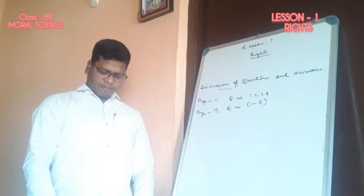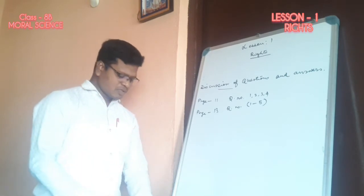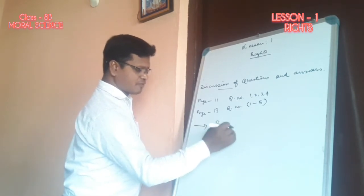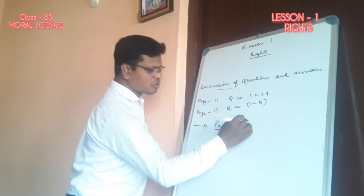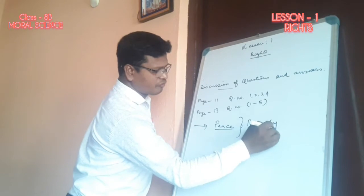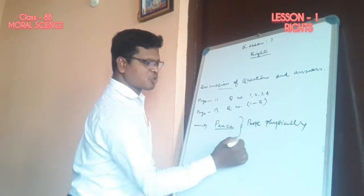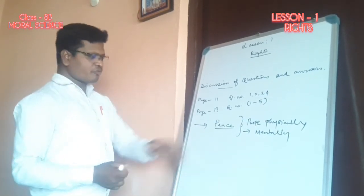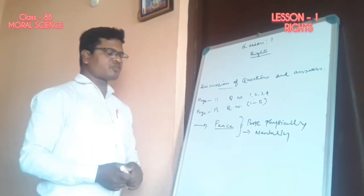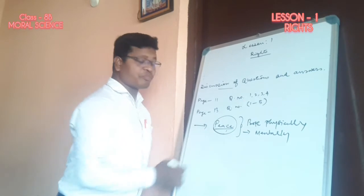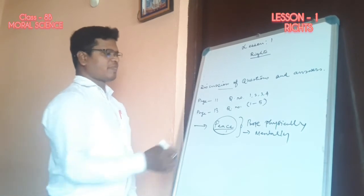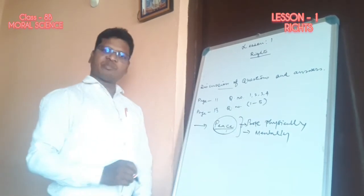According to the question, it says what can happen if human rights are ignored? The possible things that we can see: peace may be disturbed. We become both physically as well as mentally tortured. When these rights are ignored, we are not getting all these rights. So what is disturbed? Our peace. We are not able to read, we are not able to leave in a place peacefully. There is both physical and mental torture.